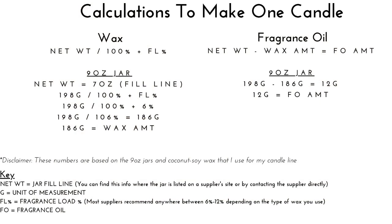Here is the formula breakdown for wax and fragrance oil to make one candle. For the wax side, the formula is: net weight divided by 100% plus the fragrance load percentage. For this particular nine-ounce candle jar, the net weight is seven ounces, which is 198 grams. So: 198 grams divided by 100% plus 6% fragrance load — 198 grams divided by 106% — gives me 186 grams. So I need 186 grams of wax to make one candle.